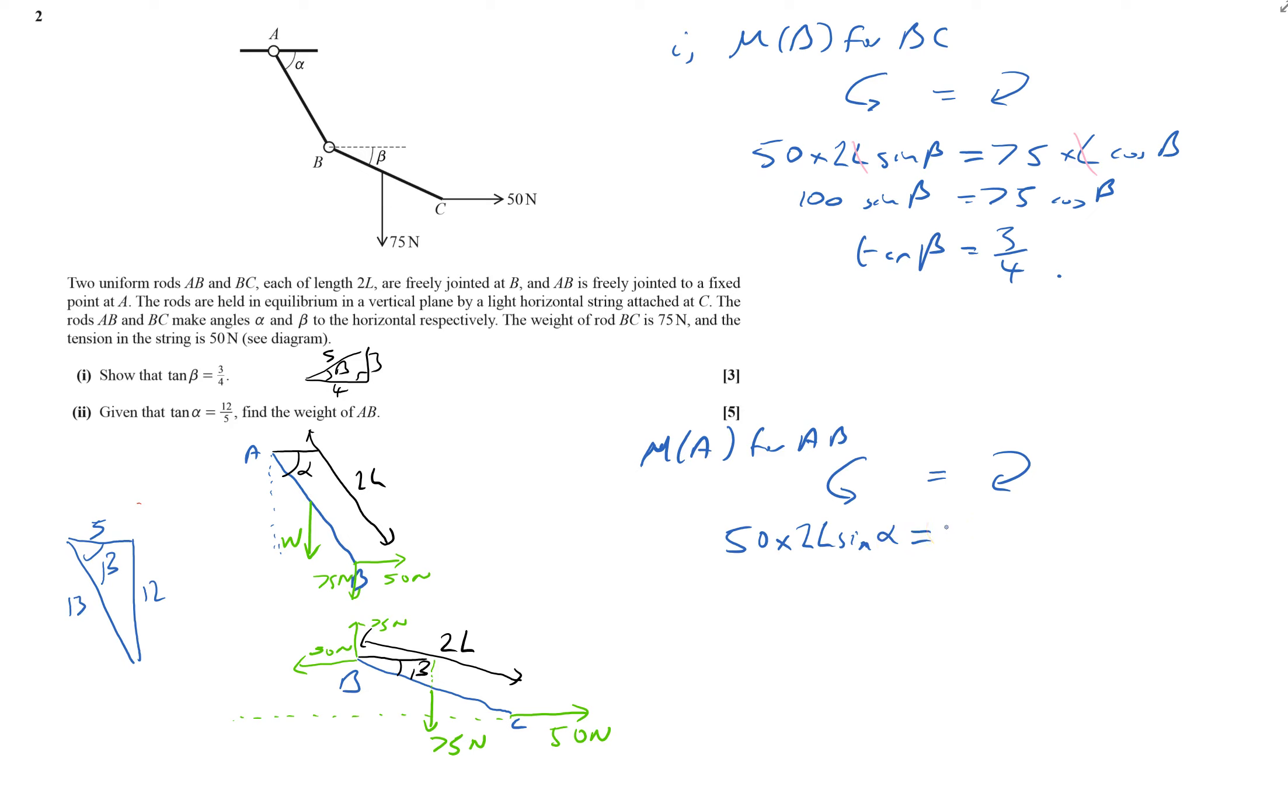And that equals, well first off I've got the 75. And that will be 75 times by 2L cos alpha. 75, 2L cos alpha. That will be the distance we've got there. And then it's going to be plus W times by L cos alpha. And that will give me 100. Oh, I can get rid of all the L's, can't I? The L's will cancel out. Which tidies it up.